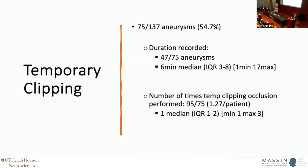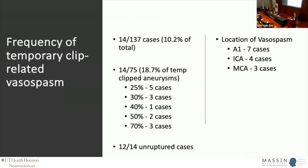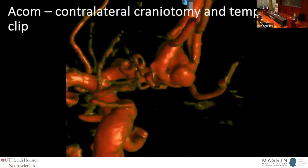The positioning vessels used for the temporary clip were mostly M1s, A1s, or A3s, and some cases included bilateral temporary clips. The frequency of focal vasospasm thought to be related to the temporary clip — determined by location — was 10%, seen in 14 cases. The vasospasm locations were primarily in the A1, ACA, and MCA territories.